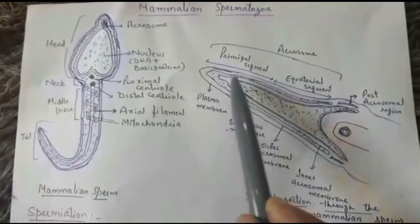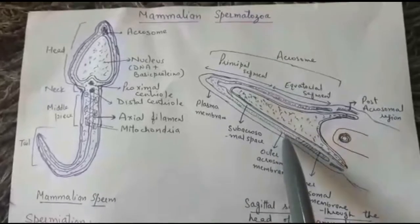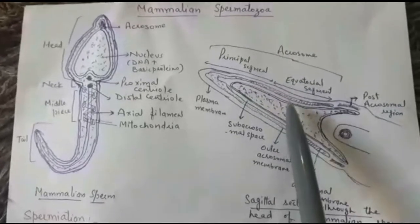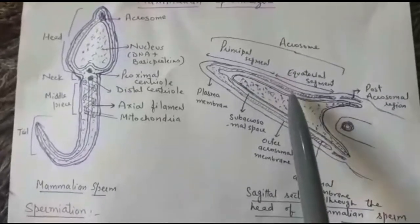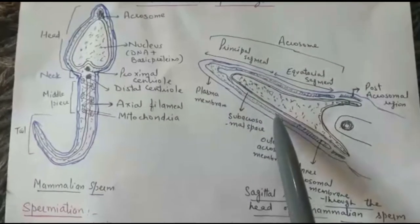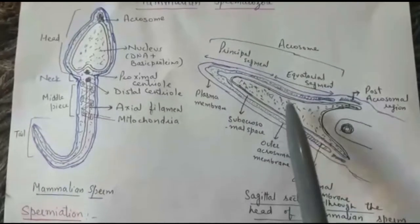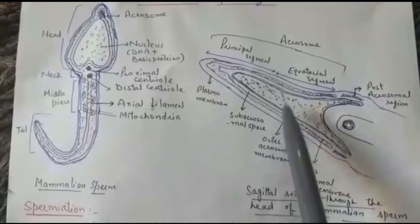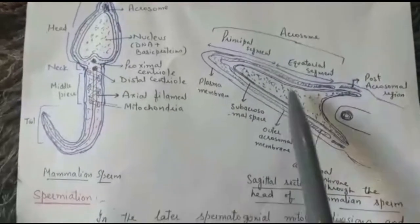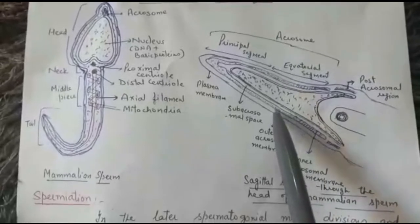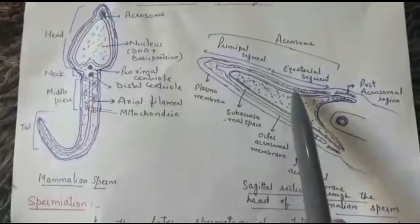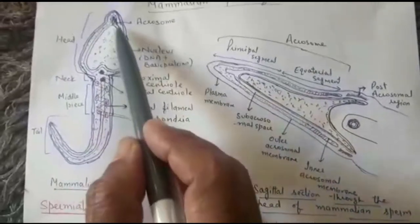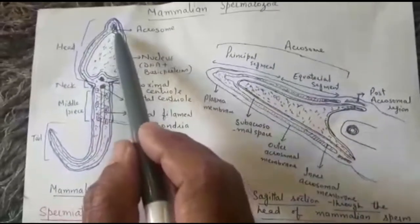The acrosome is covered by its own sheath. Acrosome is formed from Golgi bodies and contains hydrolytic enzymes, which help in the penetration of sperm into the egg. This concludes the head part, which comprises the nucleus and acrosome.